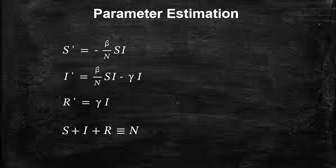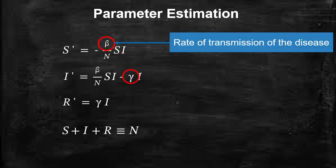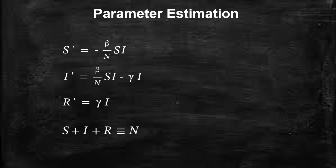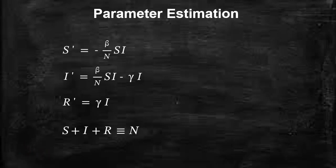Let's stick to today's objective: parameter estimation. From this model we have two parameters, beta and gamma, where beta represents the rate of transmission of the disease and gamma is the rate of recovery from the infected class.